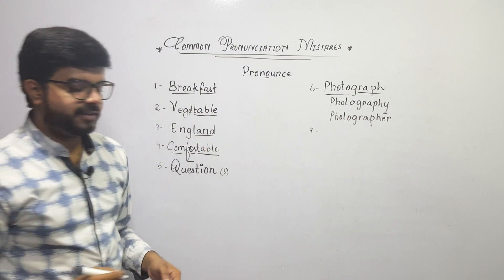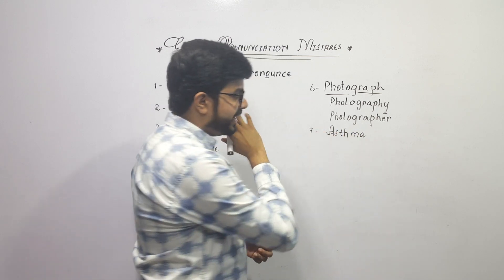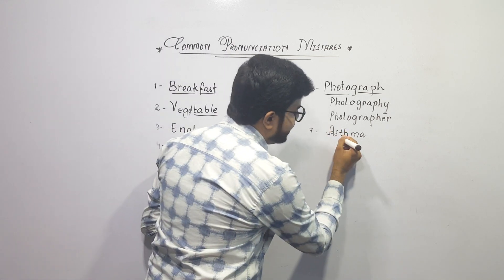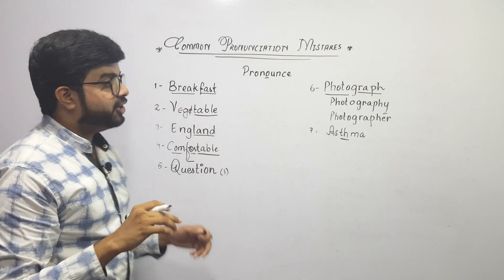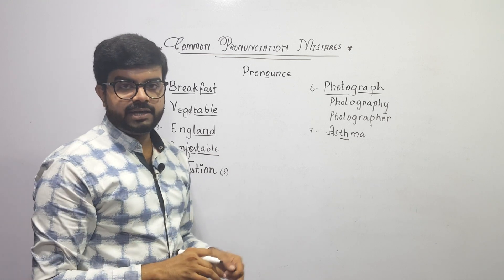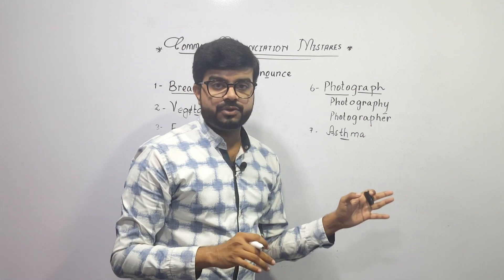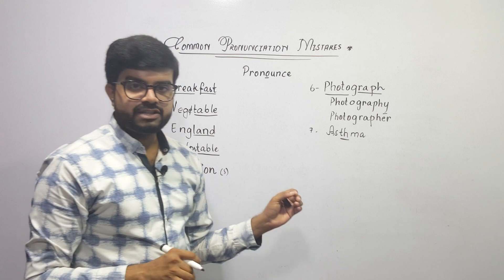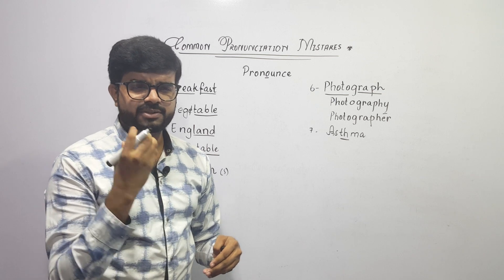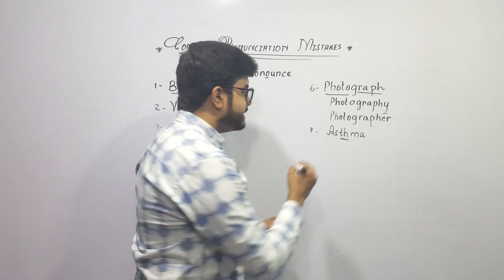The next word is a disease. It is not really difficult to pronounce — you just have to make two letters silent and pronounce it as asthma. It is not 'ass-thma' or any other variation. The correct pronunciation is asthma.